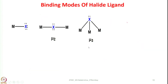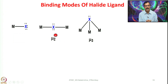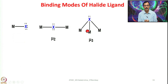Let us look into the binding modes of halides. The simplest is terminal — η1 or κ1 is more appropriate. μ2 means it is bridging two metals. When it is bridging, the symbol only indicates that the ligand bridges, but it does not specify whether the bridging is linear or bent — that information can only come from crystal structure analysis. When a halogen bridges three metal centers, we denote it as μ3.